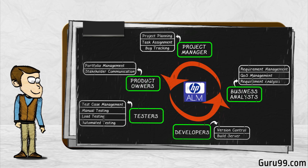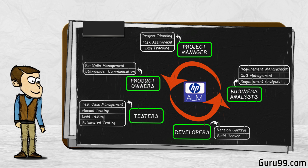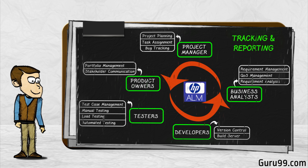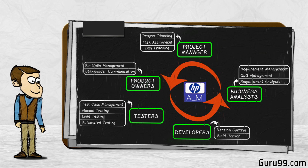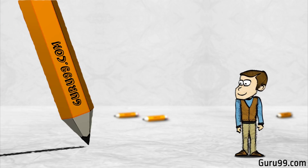It enables all the stakeholders to interact and coordinate to achieve the project goals. It provides robust tracking and reporting and seamless integration of various project-related tasks. It enables detailed project analysis and effective management. ALM can connect to our email systems and send emails without any changes, like requirement change, defect raising, etc., to all desired team members.